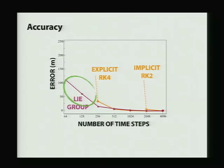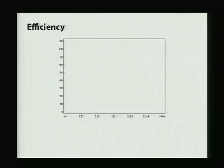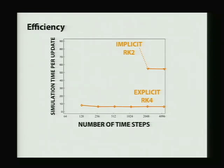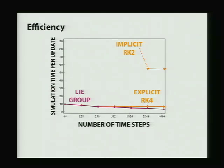Even with just 64 time steps over the course of four minutes, we're still getting very little error. So how about efficiency? Sure, it has great numerical properties, but couldn't you just refine the time step on some explicit method and get results just as good? Looking at simulation time per update versus the number of time steps: explicit methods are pretty consistent and efficient; implicit methods require a nonlinear solve, projections and things like that, making them difficult to solve. With our Lie group integrator, even in cases where we're doing nonlinear solves, because we remove some of this projection and additional work, we compete quite well with standard explicit methods.